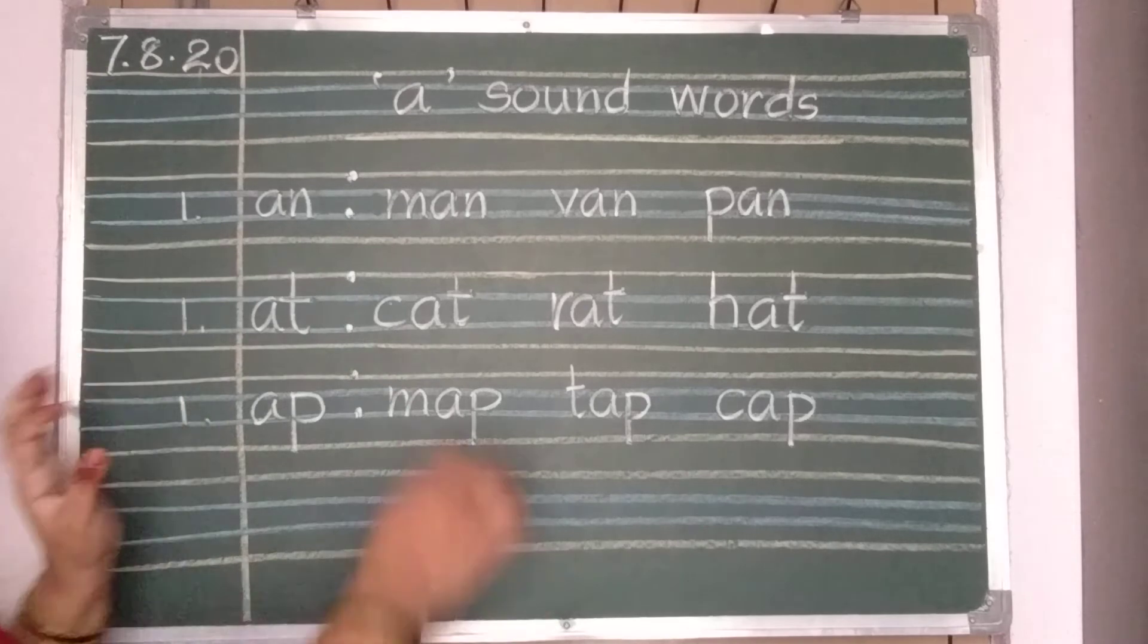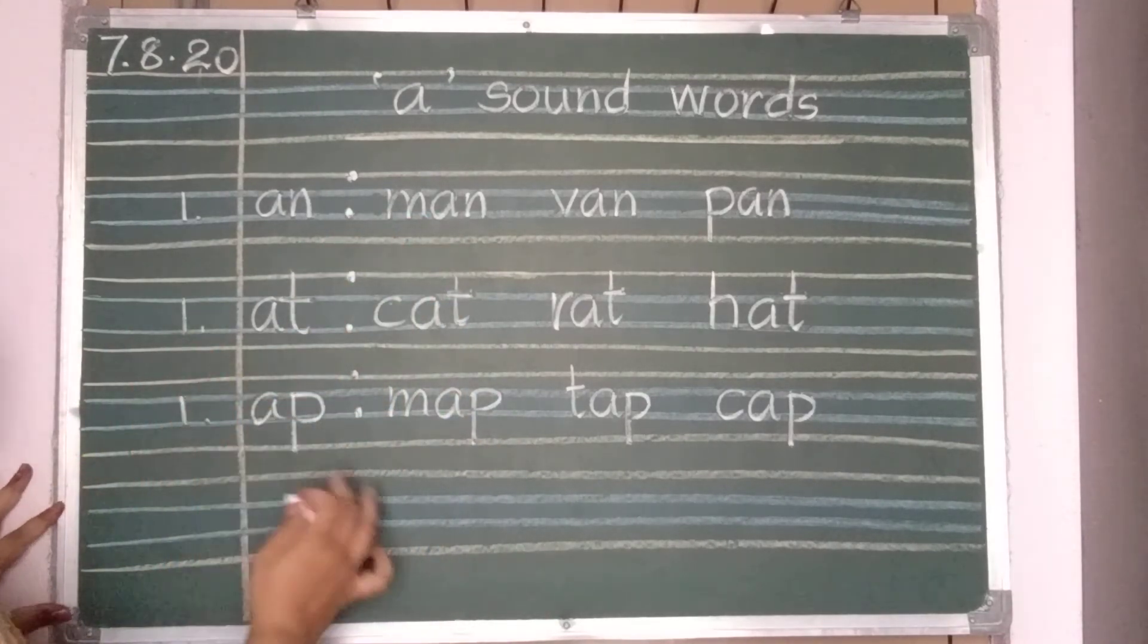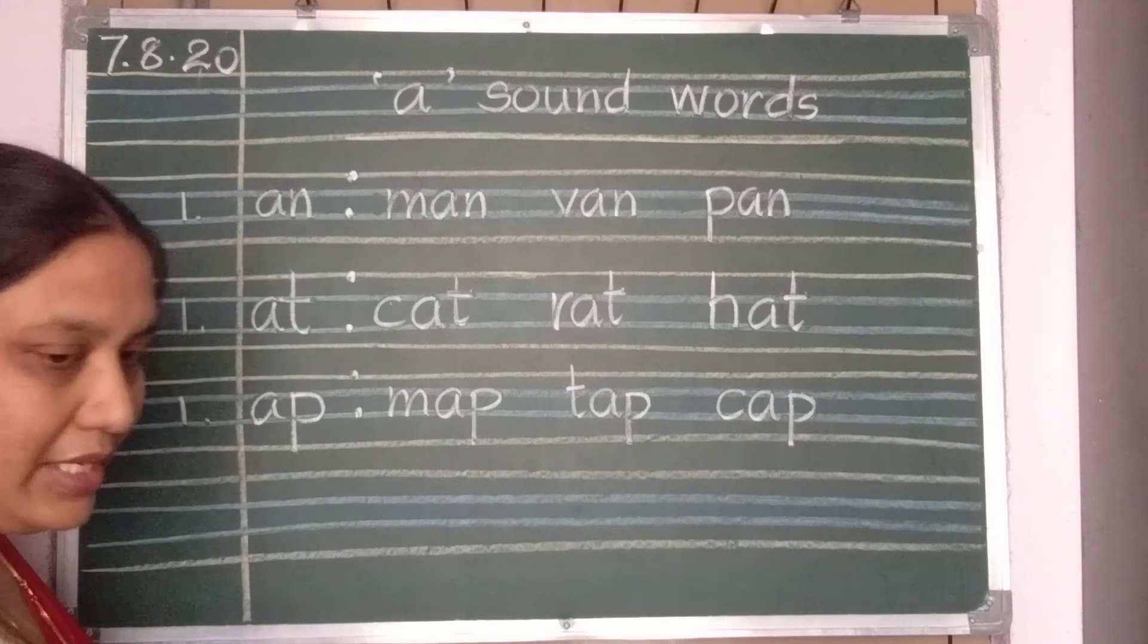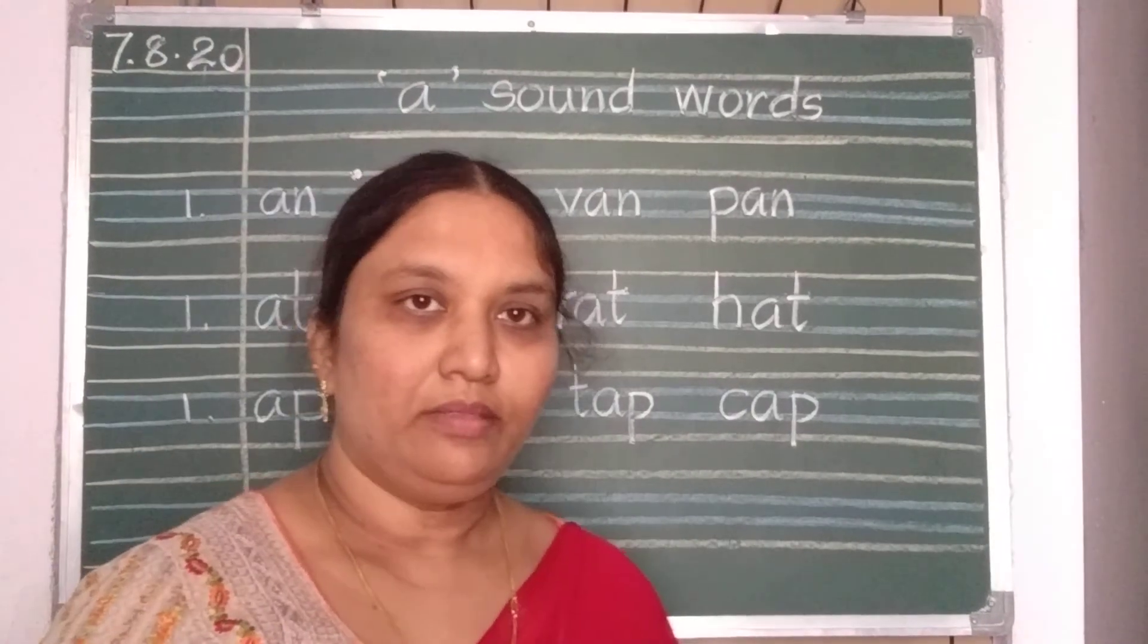So, A, N words, A, T words and A, P words you should write today in your notebooks. Each word three times you should repeat. Understood, children? Okay then. Bye.